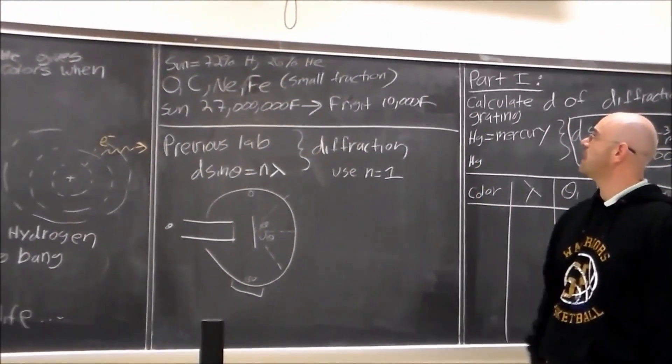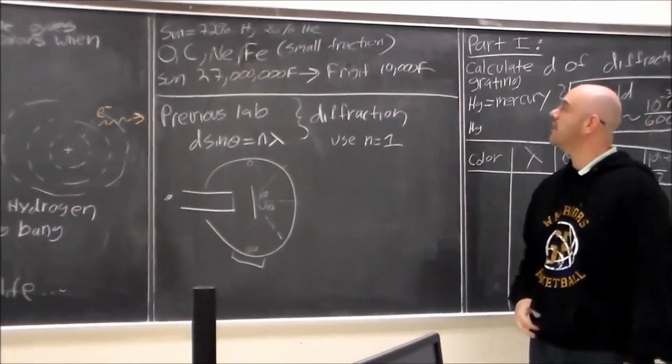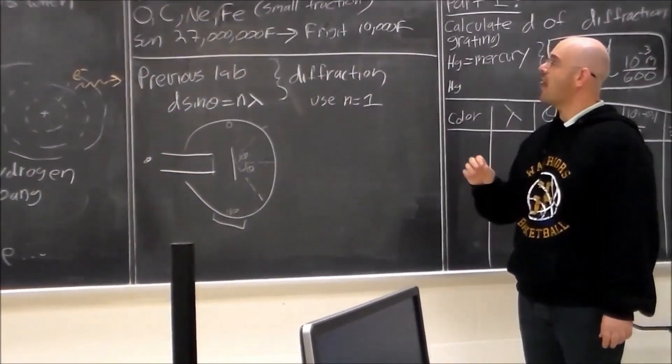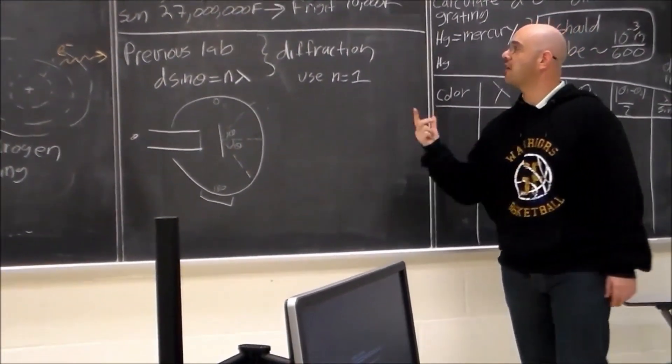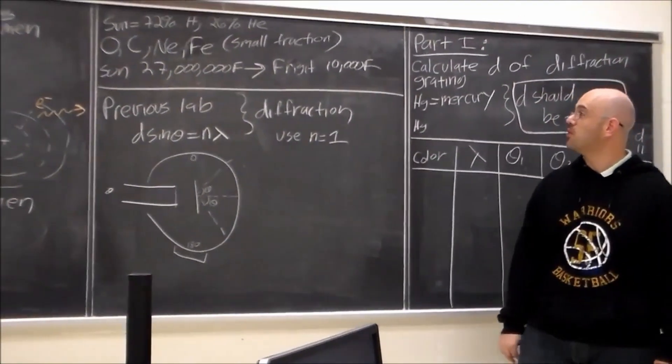Now, the sun is 72% hydrogen and 26% helium, then there's also small amounts of oxygen, carbon, neon, and iron. Iron has the highest binding energy per nucleon.